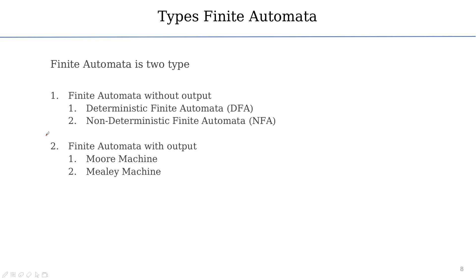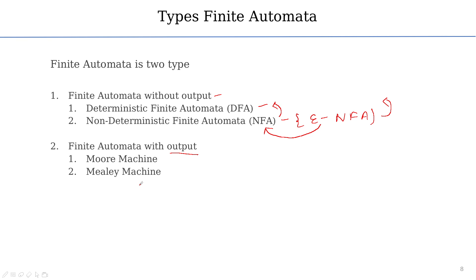This is the types of finite automata: without output includes DFA and NFA, and NFA can be further categorized as epsilon-NFA. We will study conversion from epsilon-NFA to NFA, epsilon-NFA to DFA, and NFA to DFA. With output, we have Moore machine and Mealy machine, and we will study conversion between Moore and Mealy machines. That is the overview of finite automata topics. Thank you.